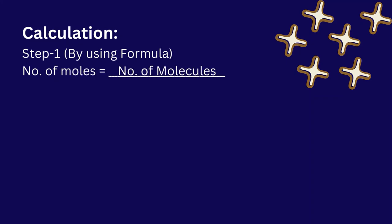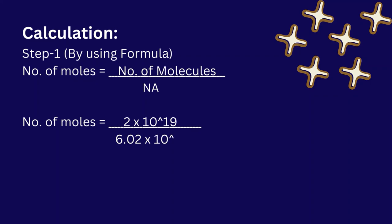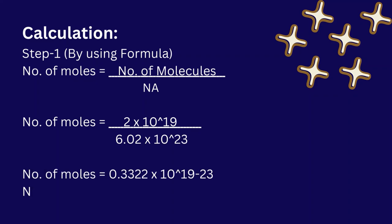Calculation step 1: using the formula, number of moles equals number of molecules divided by Avogadro's number. Number of moles equals 2 into 10 to the power of 19 divided by 6.02 into 10 to the power of 23. Number of moles equals 0.3322 times 10 to the power of minus 4 moles.